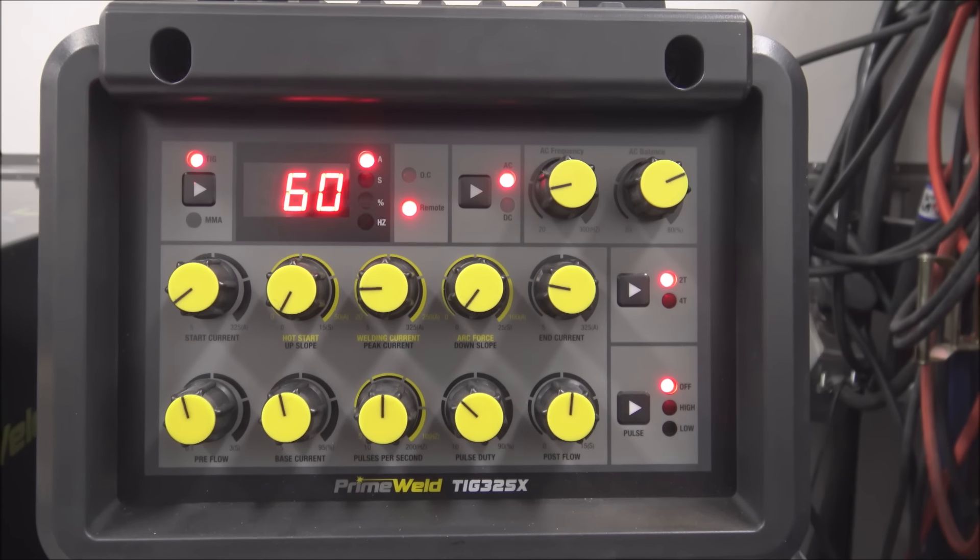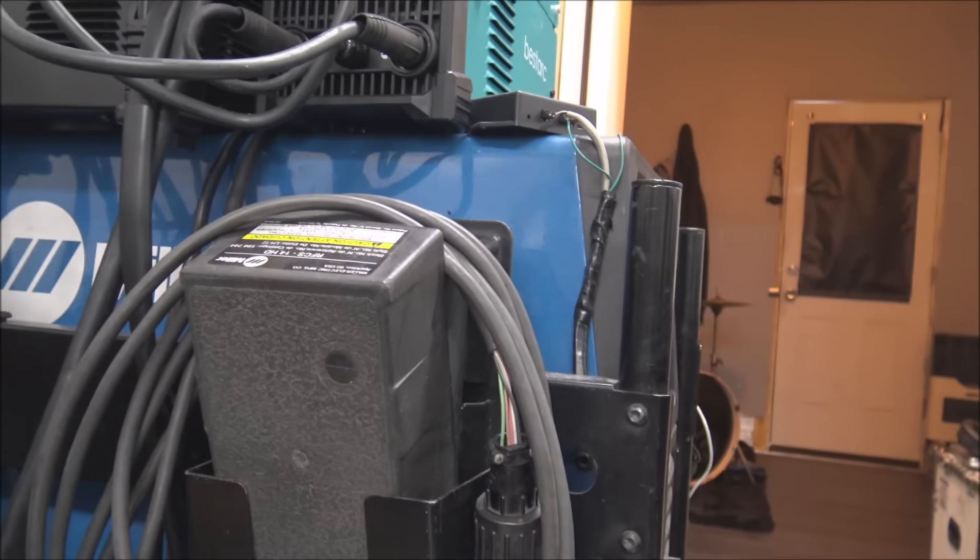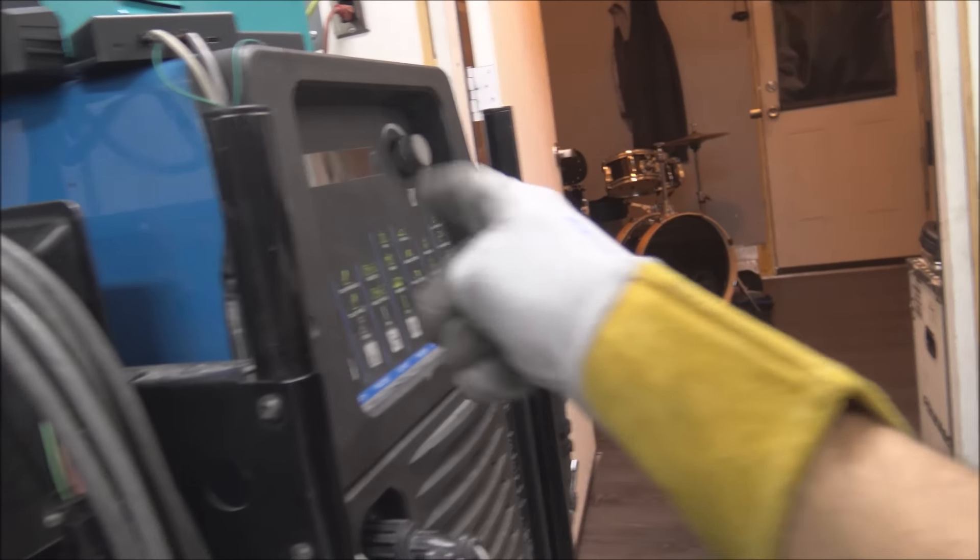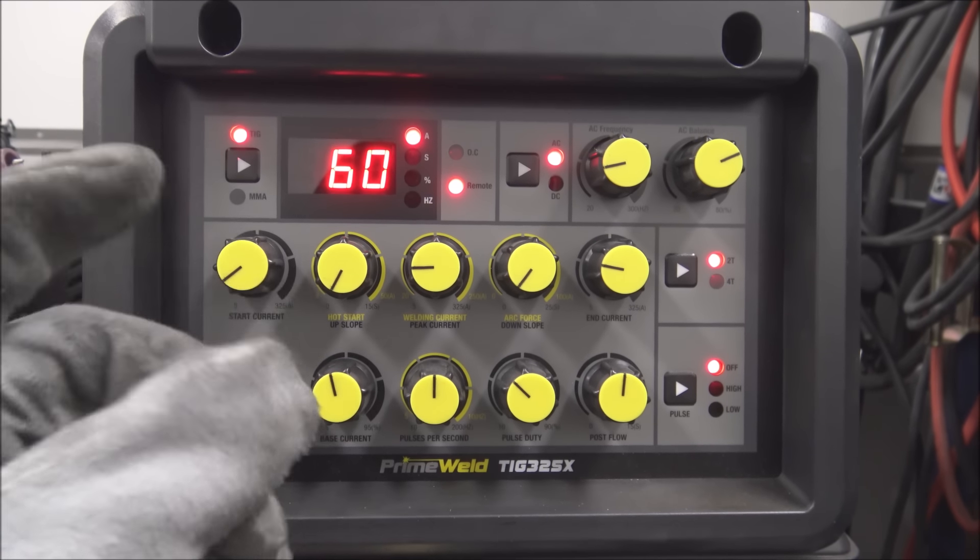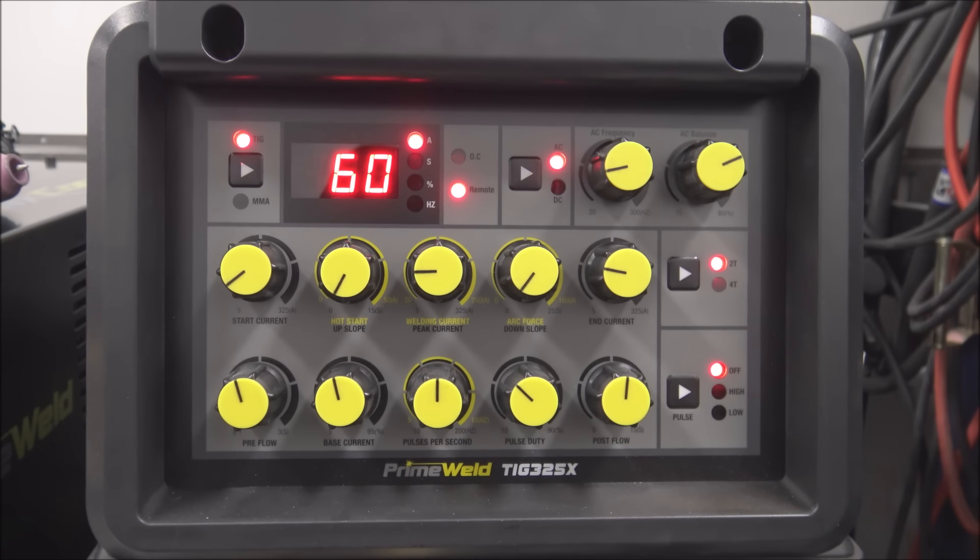The Miller that I have, this Dynasty, it's cool because it has memories. You can save parameters in there and there's like 10 memory banks, but you don't really need it. Just snap a quick picture and see where everything's at or write it down.